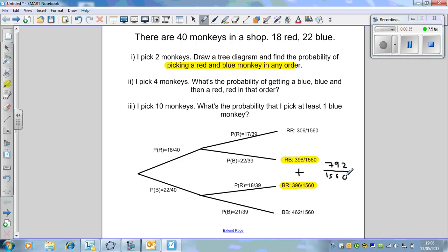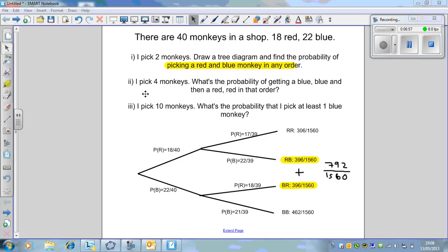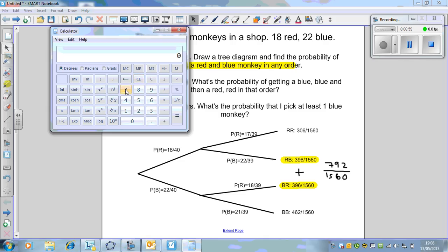What we're after is finding the probability of picking a red and blue in any order. That represents red blue and blue red. By adding these probabilities up, we can get the answer. Two lots of 396, which is 792 over 1560.